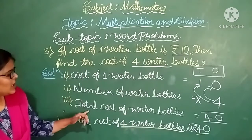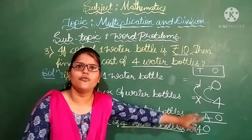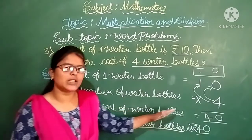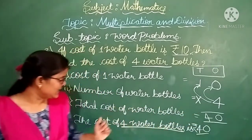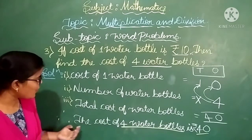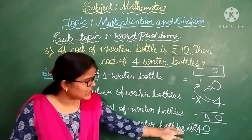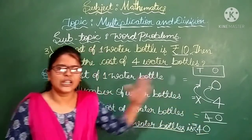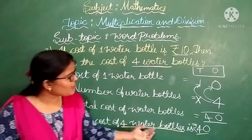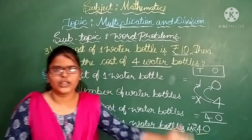Third point: total cost of 4 water bottles is 40. Therefore, the cost of 4 water bottles is rupees 40.